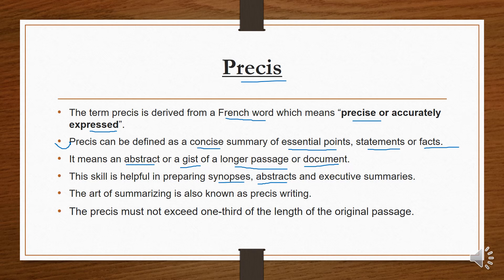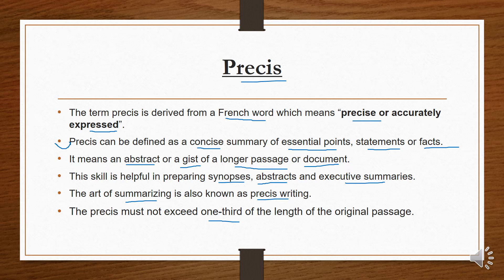Executive summaries are lengthy summaries but we take the main points from them. The art of summarizing is also known as précis writing — the main point is that we summarize one thing in short form. An important rule is that a précis must not exceed one third of the length of the original passage.